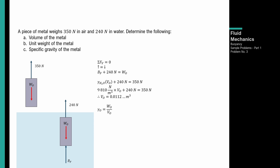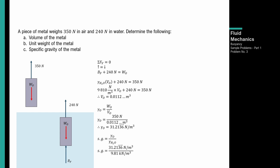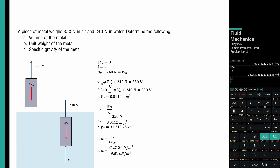Para naman sa unit weight ng object: equals weight over volume. Weight is 350 newtons, volume yung nakastore sa A. So: 350 / 0.0112 — store sa B — unit weight ay 31,213.6 newtons per cubic meter or 31.2136 kilonewtons per cubic meter. Specific gravity: unit weight ng object over unit weight ng water (9.81 kN/m³). Therefore, specific gravity is 3.1818.